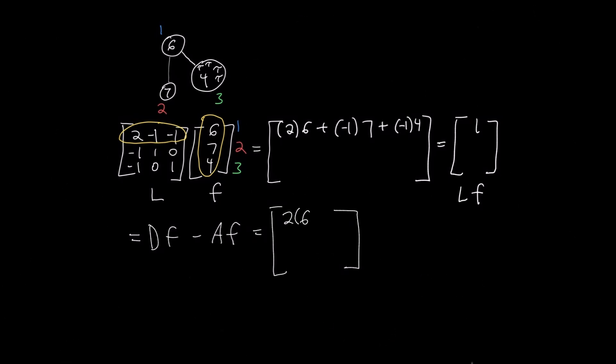Let's rewrite LF as DF minus AF. Let's look at a single row, node i, of LF. We'll perform an operation for matrix multiplication on it.